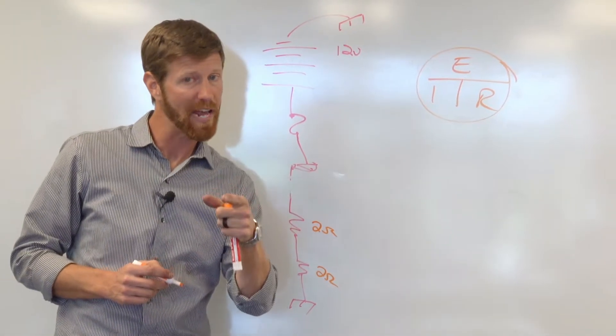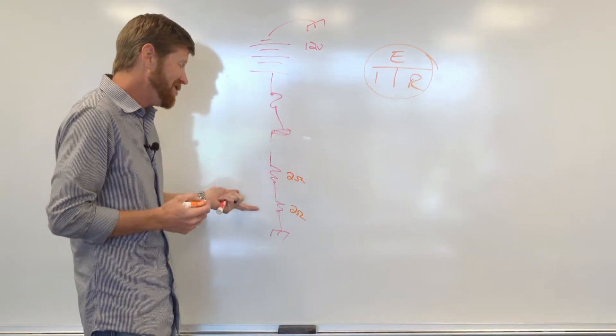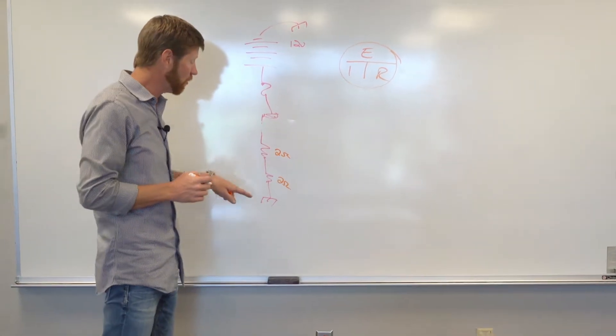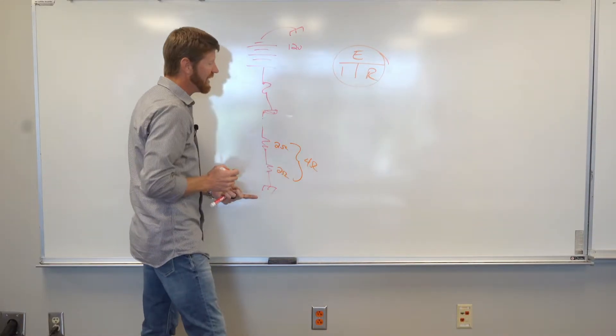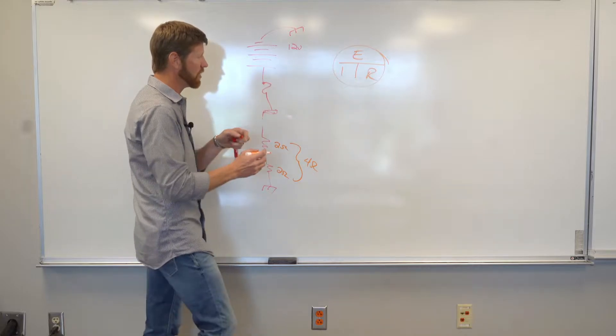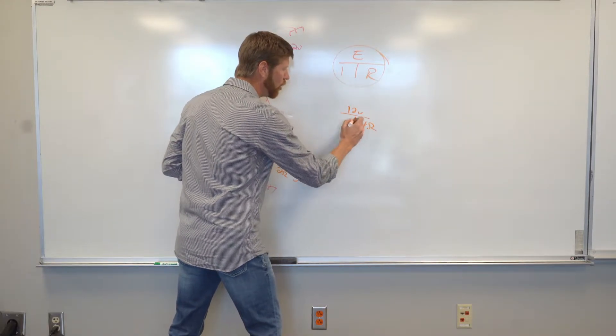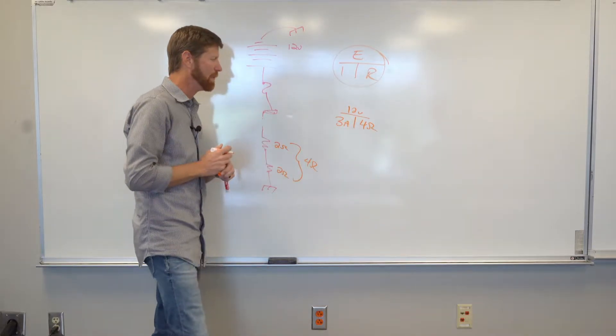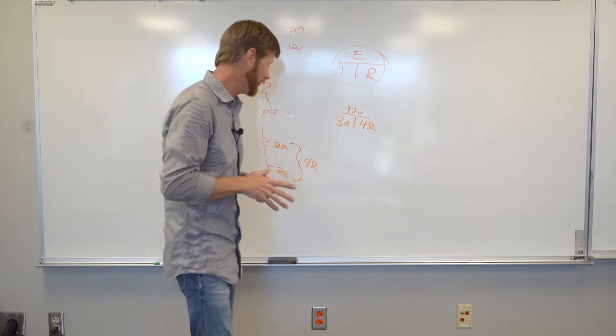And if you remember from our last video, the resistance law for series says just add them up. That's how you get the total. So a two ohm plus a two ohm is going to be four ohms. Now, if I plug these numbers into Ohm's Law, I have 12 volts and I have four ohms. That means three amps is going to flow through the circuit. So that's series. So that one's pretty easy.